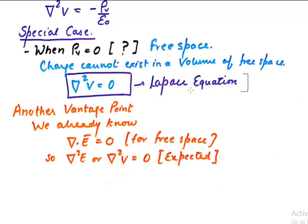Now another vantage point I want to discuss is that we know from an earlier discussion from Maxwell's first equation that divergence of E is 0 for free space. In free space we do not have any volume charge density so del dot d is 0 which gives me del dot E is 0, and if del dot E is 0 then Laplacian of E will also be 0 or Laplacian of v will also be 0. So the expected result is in sync with the Laplace equation which is a special case of Poisson's equation.